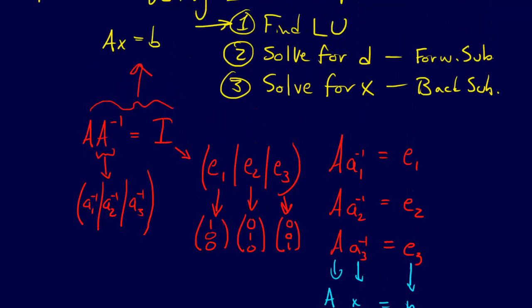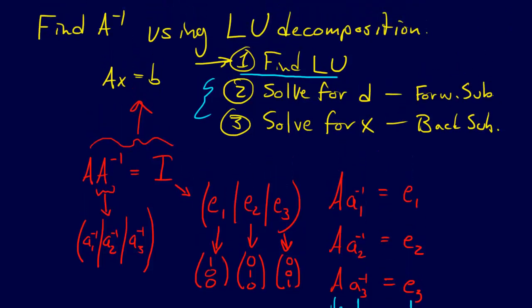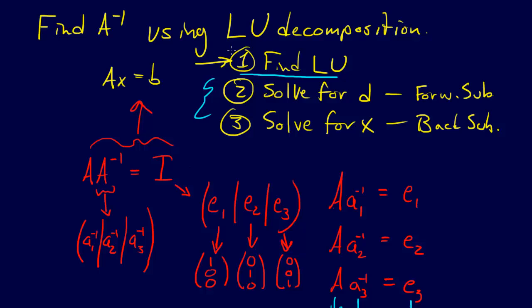And we're solving this equation. And the nice thing about this, of course, is the only two steps of this we have to do are steps two and three. We have to do those for each one. But we don't have to find LU over and over again. Because once you've found LU once, you've found it for all time. And so this is a very nice way we can use A inverse to compute the LU decomposition.